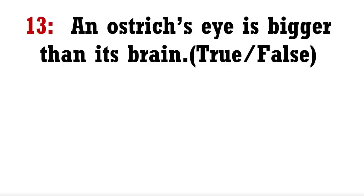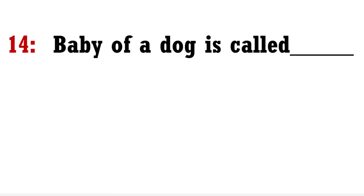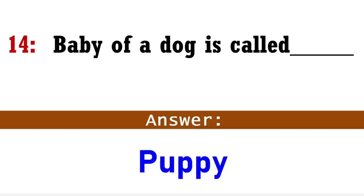An ostrich's eye is bigger than its brain, true or false? Answer: True. A baby of a dog is called... Answer: Puppy.